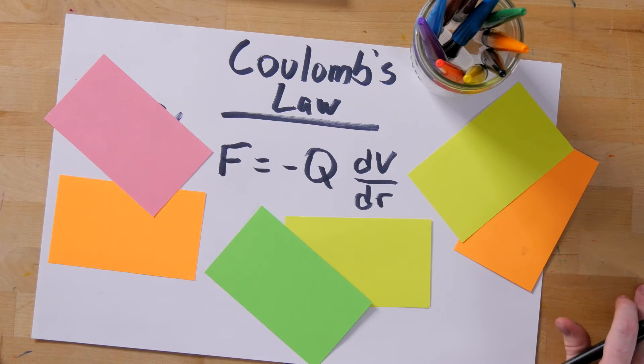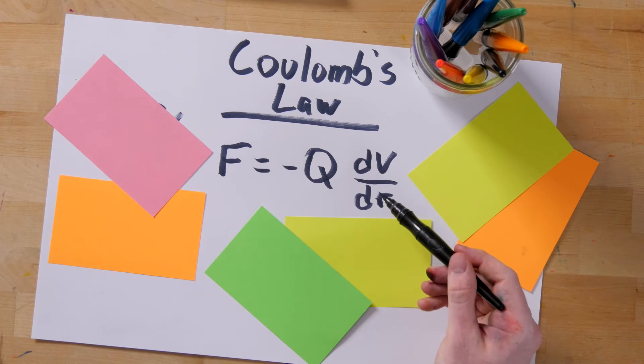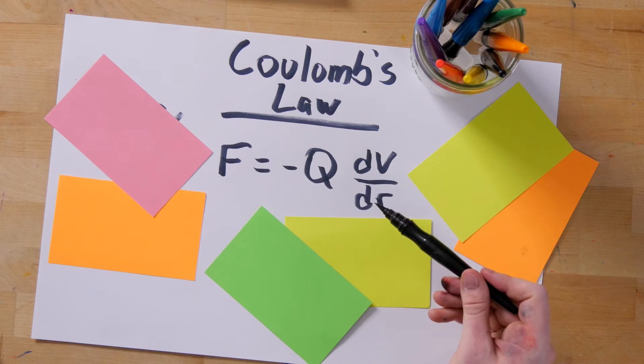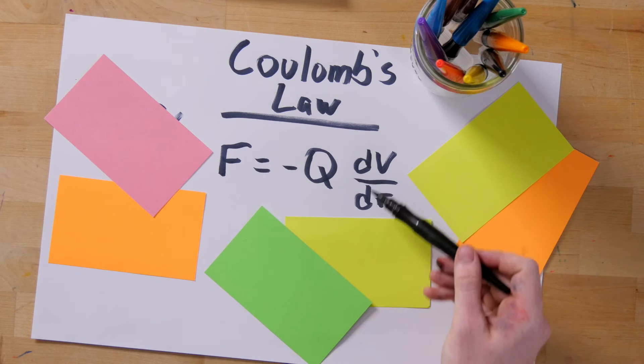As we talked about before, the force on a charge is given by this general equation. But when the electric potential is created by a point charge, we know exactly what the gradient will be.